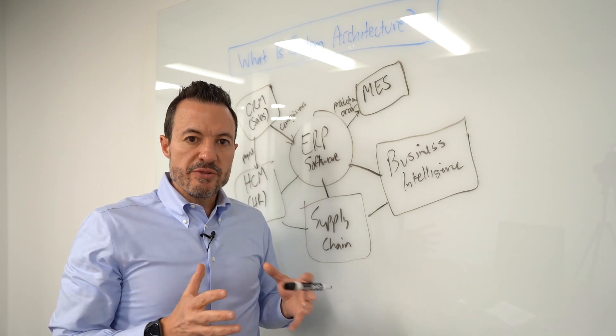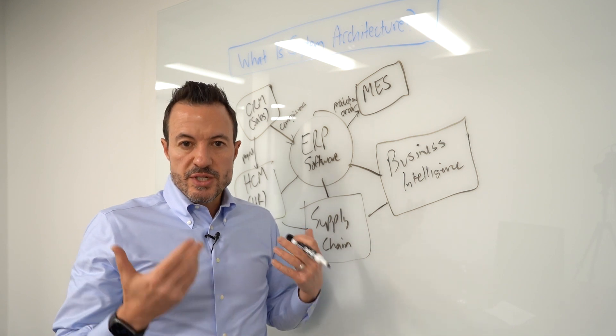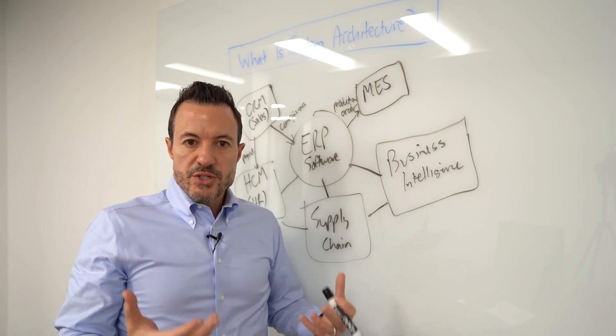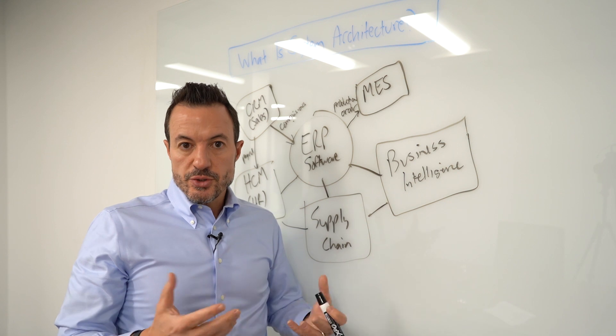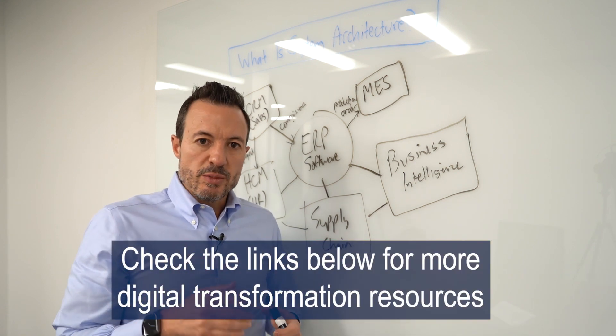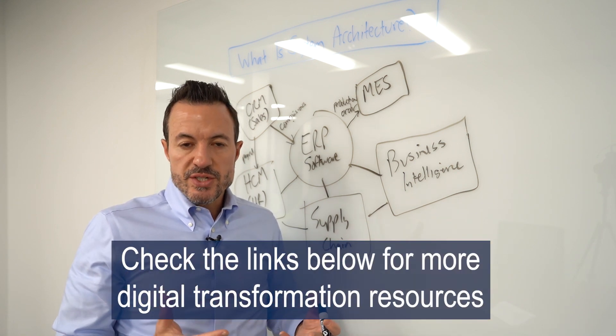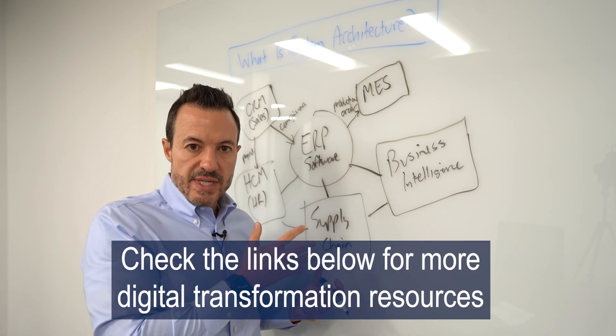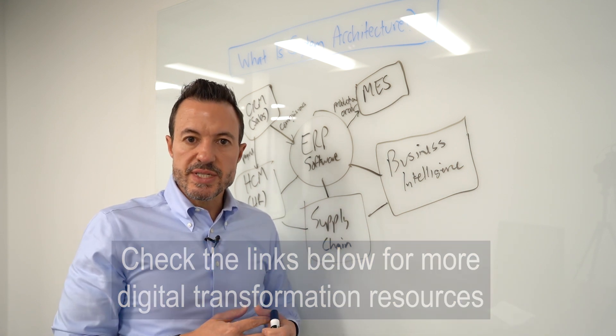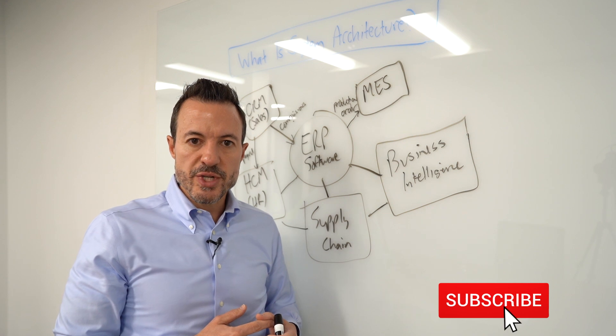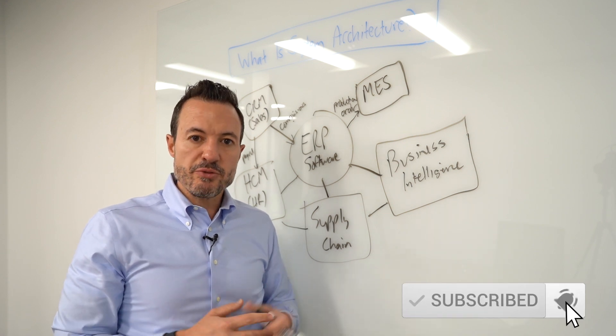So I hope this has given you some advice or some things to think about as you think about system architecture and how it ties into your overall digital strategy and your digital transformation. I've also included some links below that provide additional best practices for digital transformation, including things like system architecture, but also looking at some of the people, process, and technology aspects of digital transformation and change. So I hope you found this information useful.